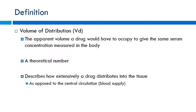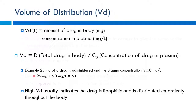When measuring drug levels in the body, we usually take a serum sample. Knowing how well a drug distributes, we can use that as a surrogate to determine the concentration out in the tissues. The calculation: VD = dose (D) divided by the initial plasma concentration (C0). If I give 25 mg of a drug and measure a plasma concentration of 5 mg/L, VD equals 5 liters. Understanding this relationship is key to how volume of distribution works.